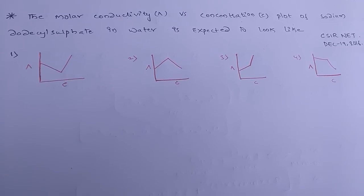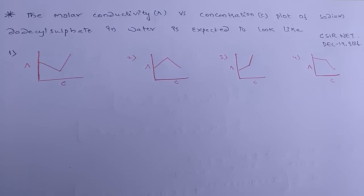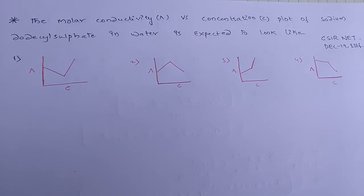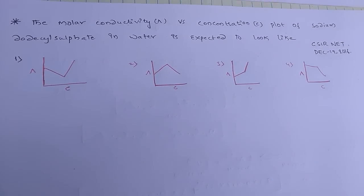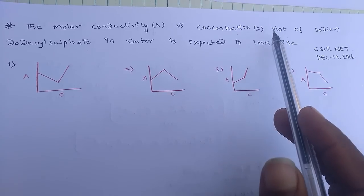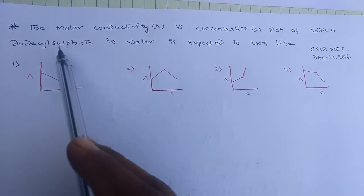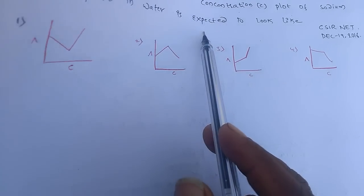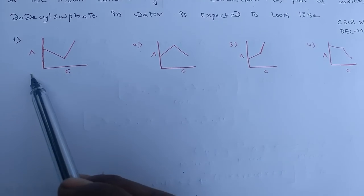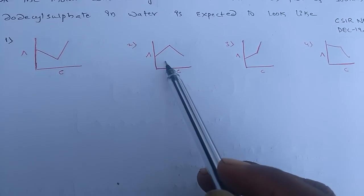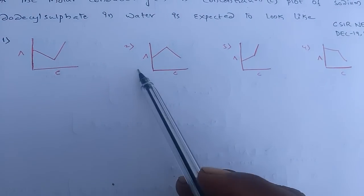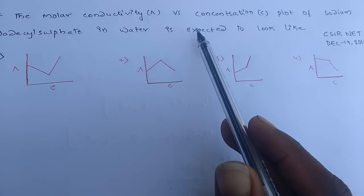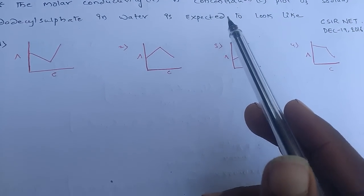Hi, this is Ranjivy. This question appeared in CSIR net December 2016. The question is: the molar conductivity lambda versus concentration of sodium dodecyl sulfate in water is expected to look like — and we have four options. What will be the correct option for the graph of molar conductivity versus concentration of sodium dodecyl sulfate in water?